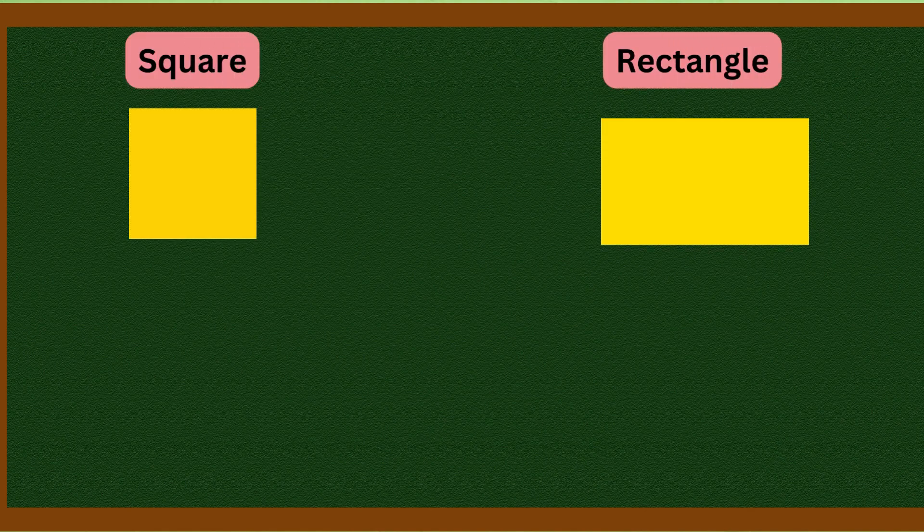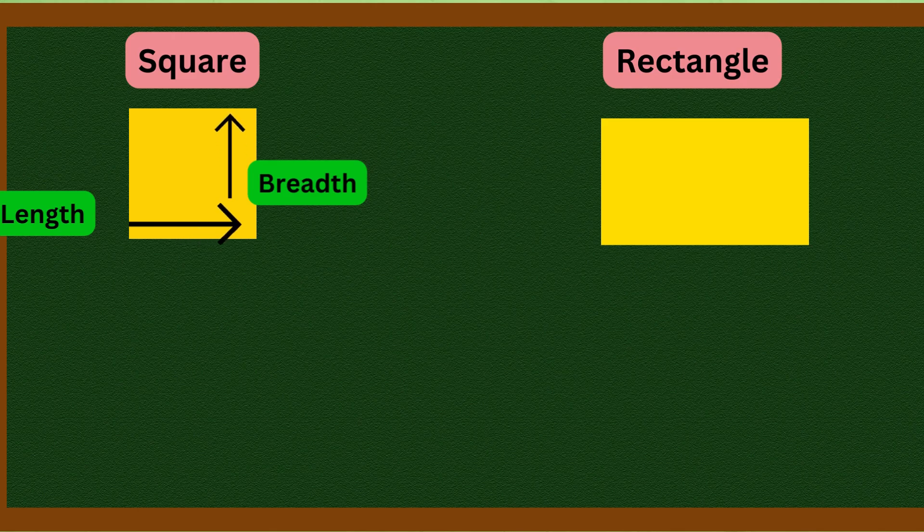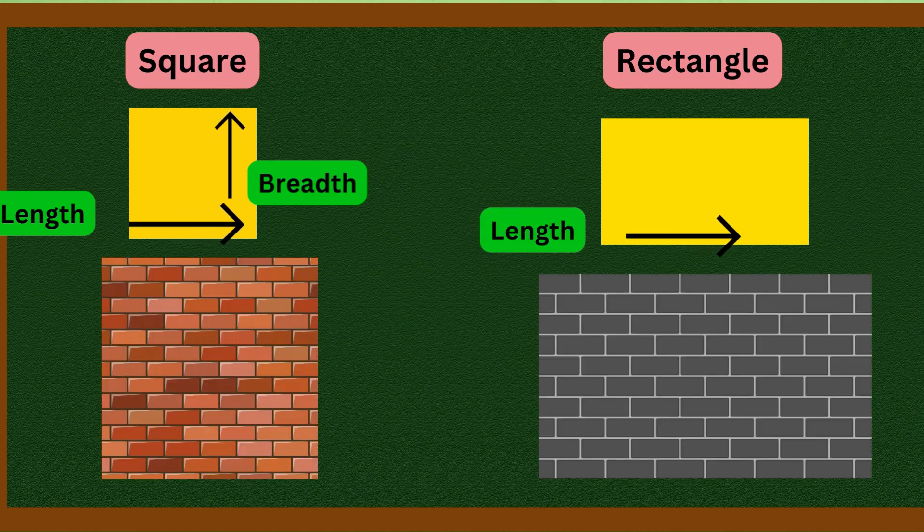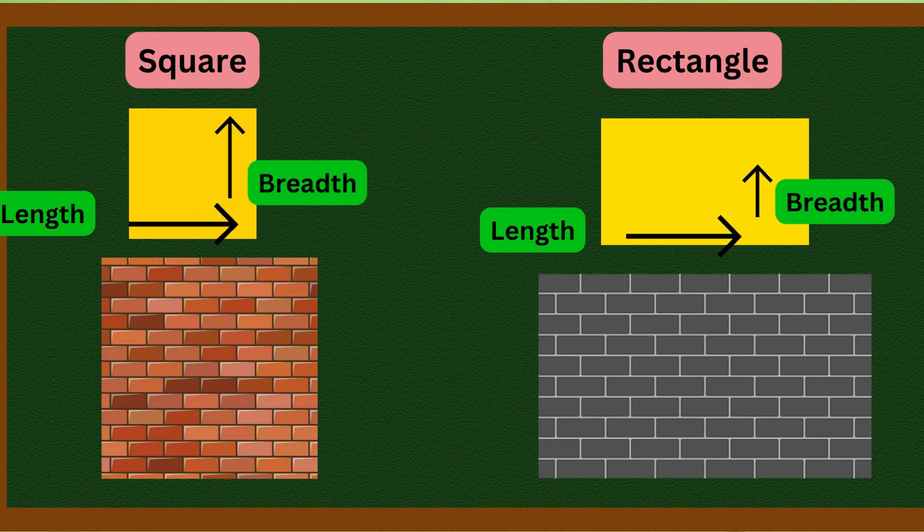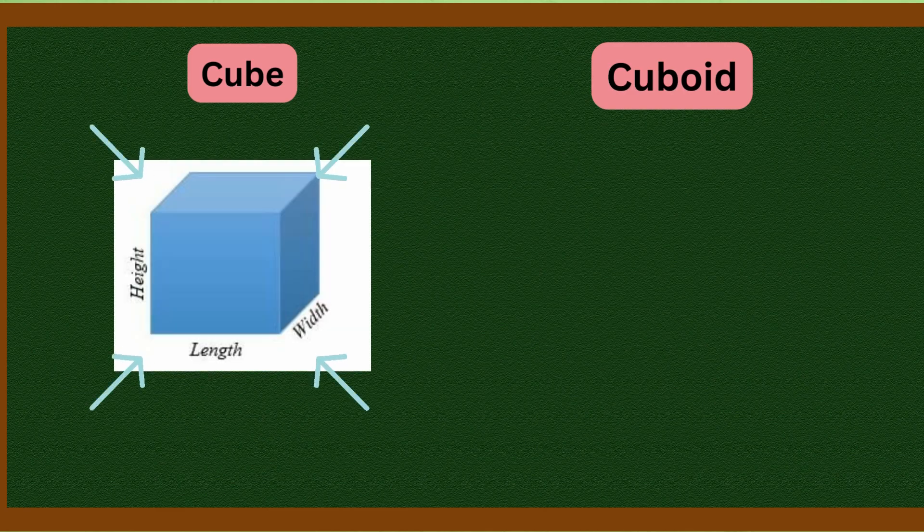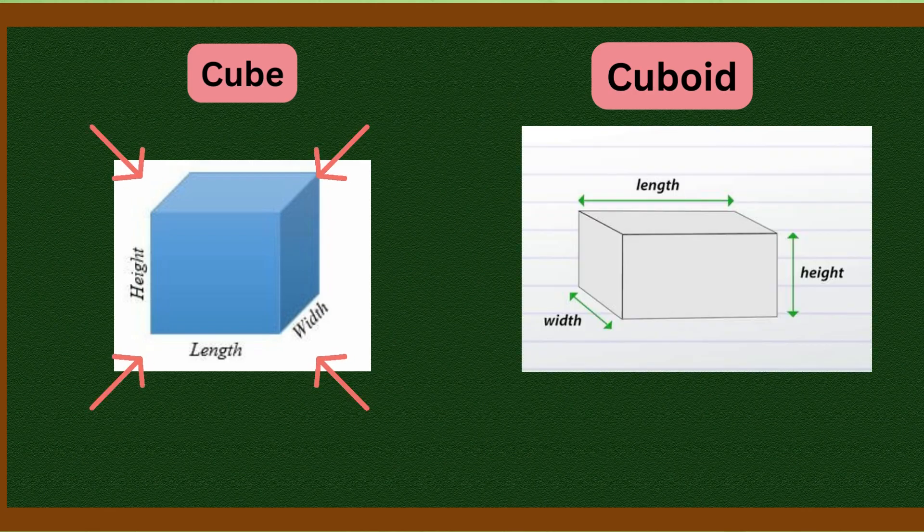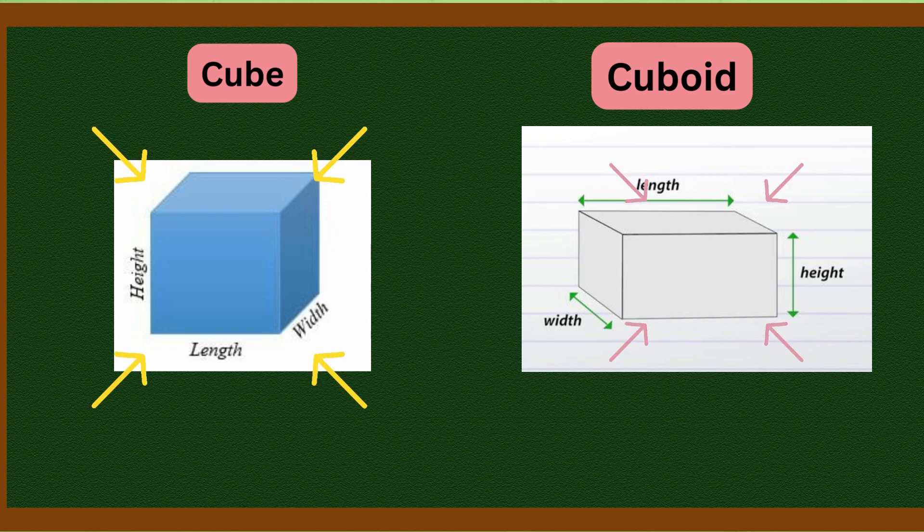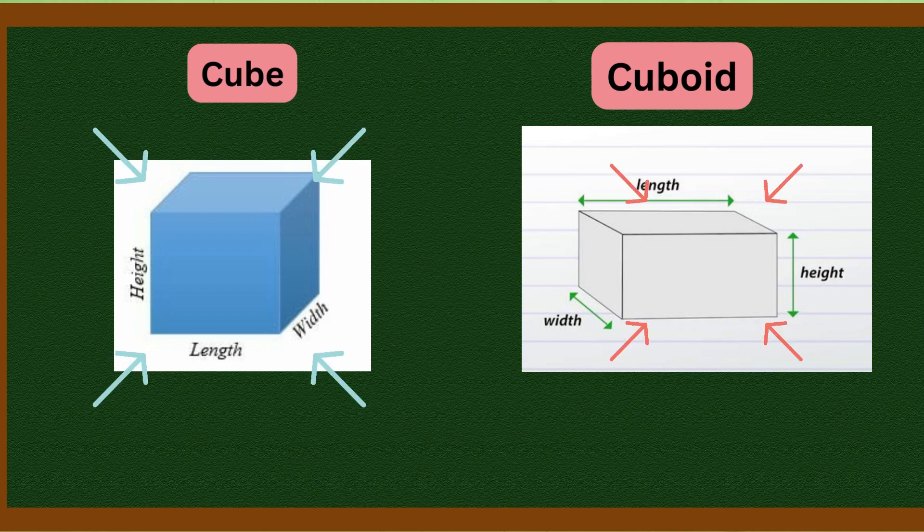Same way, what is the difference between cube and cuboid? In cube, length, breadth, and height - all three are equal. But in cuboid, length, breadth, and height are different. This may be a little difficult for you right now, but if you observe things around you, it will be very easy to understand shapes. Let's see the next part of the exercise.